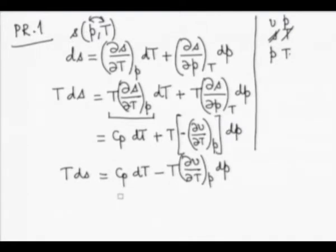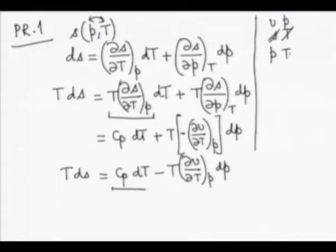We thus derive the first TdS relation: TdS equals CP dT minus T times the partial of V with respect to T at constant P times dP. You will notice one term contains CP and another term contains PVT data. When you integrate this, you integrate along an isobar then along an isotherm. Along the isobar you need CP as a function of temperature, and you need PVT data over the required part of the state space. That takes care of PR1.